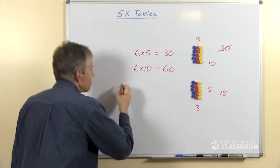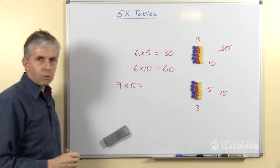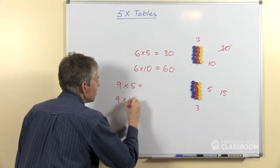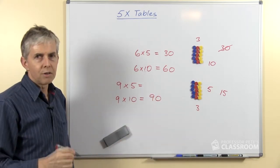What about a harder one? Supposing the question was 9 times 5, how would you work out the answer? Well we can do the same thing. What is 9 times 10? 9 10's are 90. What's half of 90?